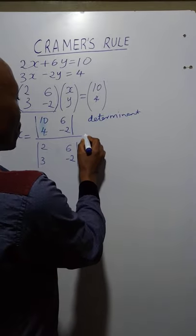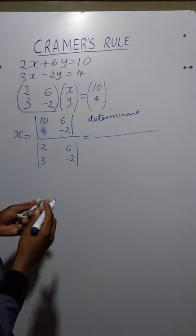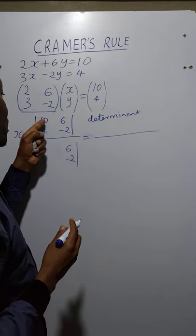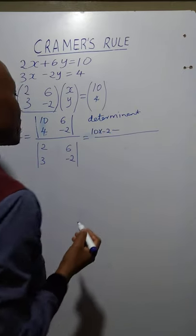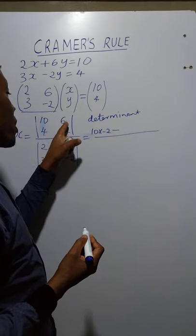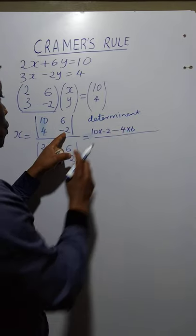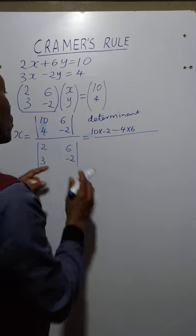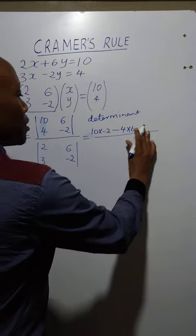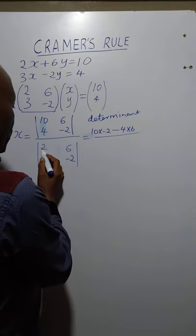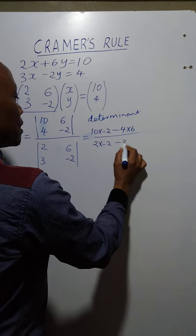From there, the determinant is found by multiplying the elements in the primary diagonal — that is 10 times negative 2 — then subtracting the product of the elements in the secondary diagonal, which is 4 times 6. So we have 10 times negative 2, minus 4 times 6. We start by multiplying from top left to bottom right, minus the other. All over the denominator: 2 times negative 2, minus 3 times 6.